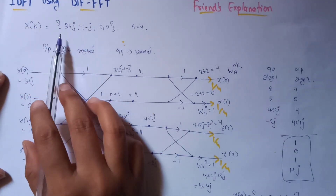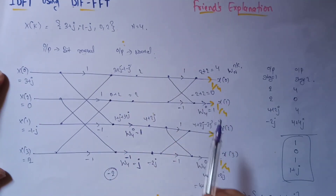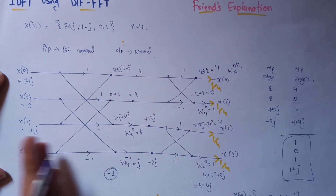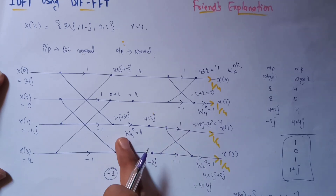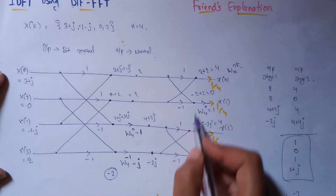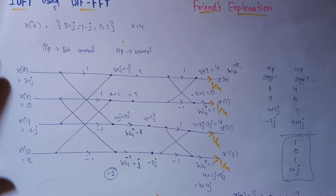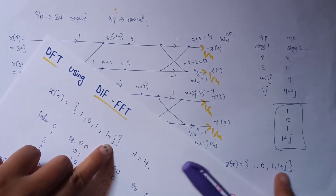Let's recap what we have done. We took the sequence in bit reversal order in the frequency domain, and the output in normal order in the time domain. We drew the butterfly diagram: single butterflies on the right hand side and overlapping butterflies on the left hand side. The W_N to the power of nk terms are on the right bottom side of the butterfly. Finally we multiplied every result by 1/4. The original DFT input was 1, 0, 1, 1 plus j — the same as our IDFT output, confirming the result.